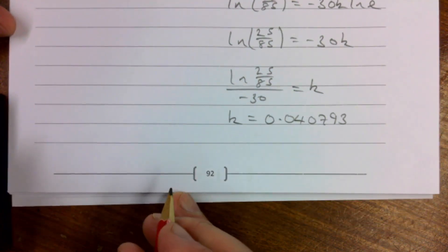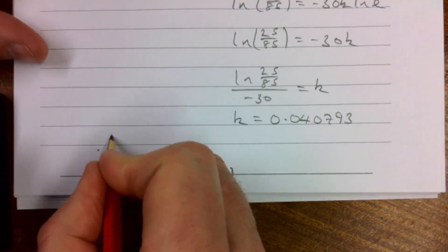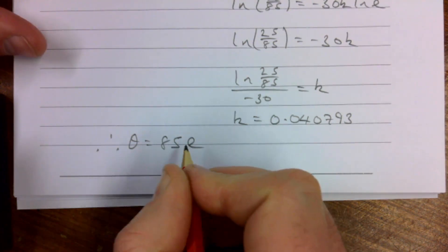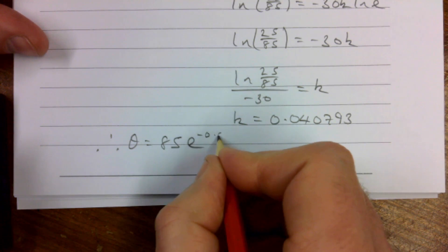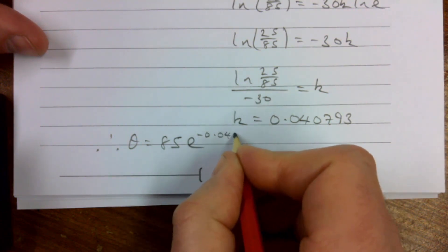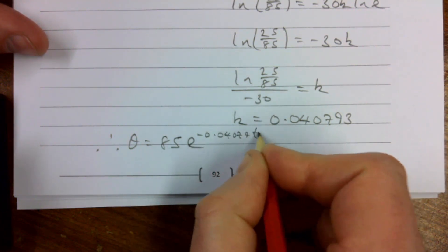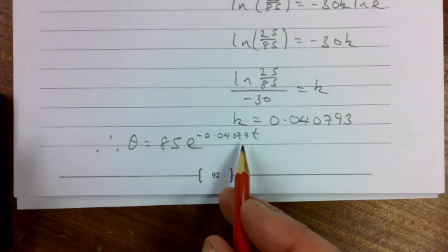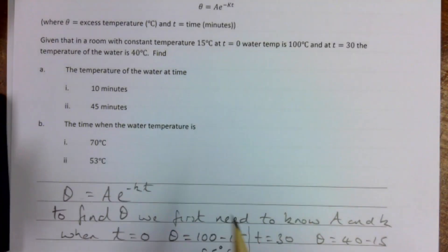So my equation that I'm going to use, therefore θ = 85e^(-0.040790t). And believe it or not, I can't believe I'm going to say this, I'm now ready to start the question. I found the formula I'm going to use and now I can eventually solve part A and part B here.